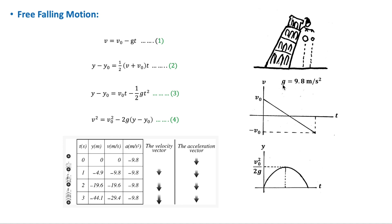The value of g varies with altitude as well as other factors, but in solving problems involving objects falling near the surface of the Earth, g can be assumed to be constant with a value of 9.8 meters per second squared, and air resistance can be neglected.